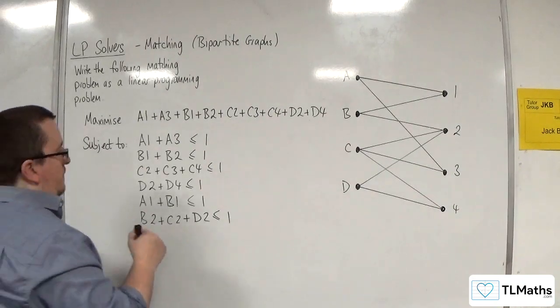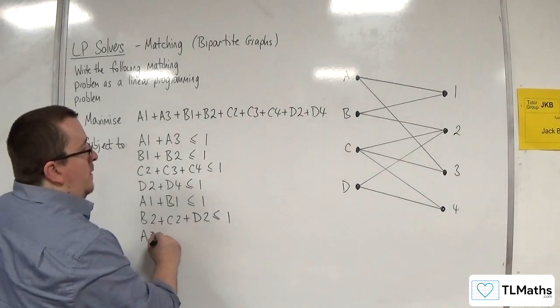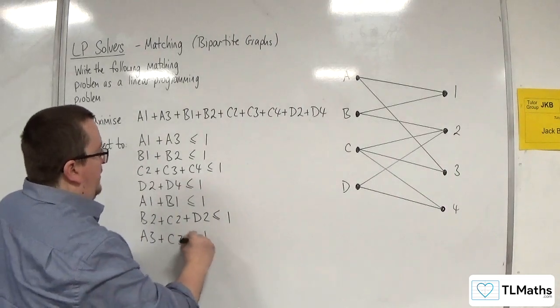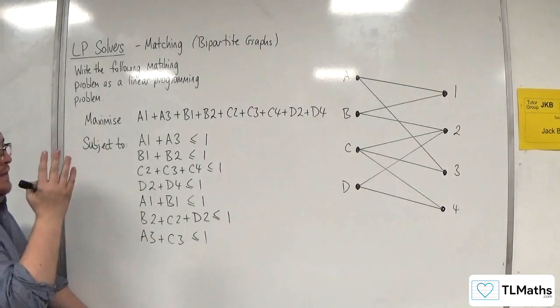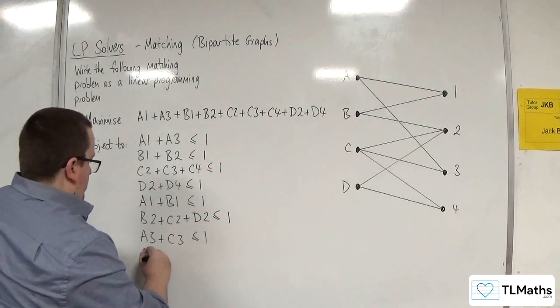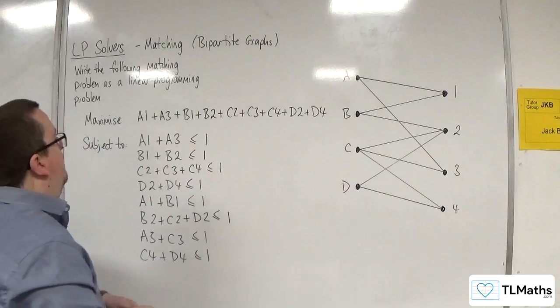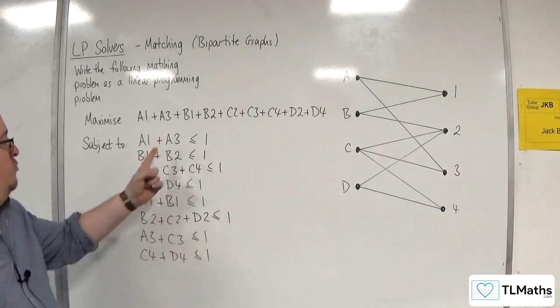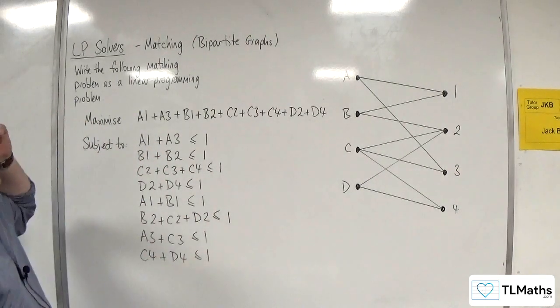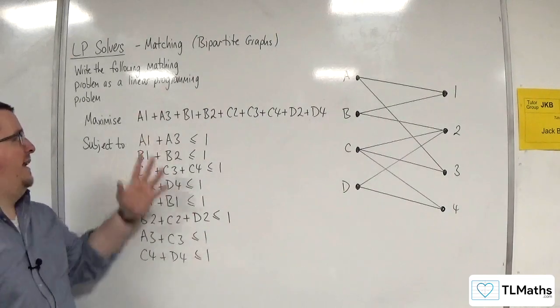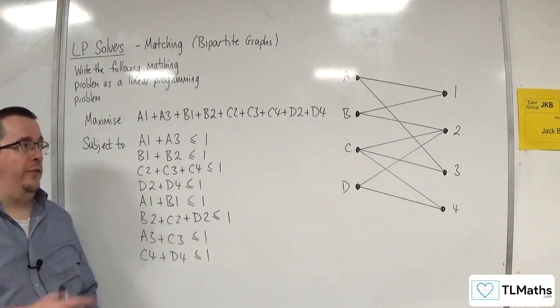Then for job 3, we've got A3 plus C3, and that's got to be less than or equal to 1. And then for job 4, C4 plus D4 has got to be less than or equal to 1. And so these are the constraints required in order to have this as a linear programming problem that will solve it.